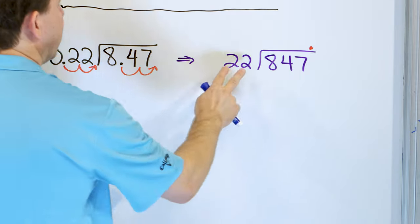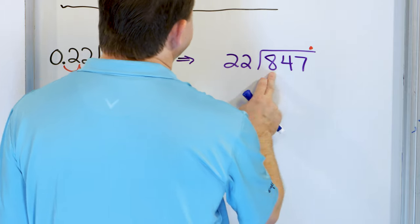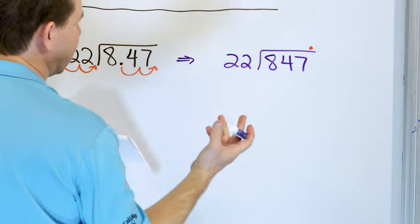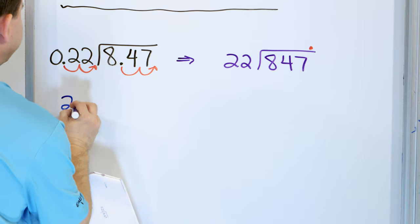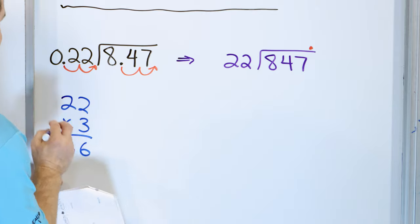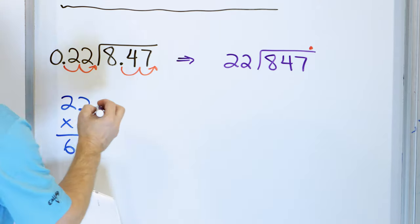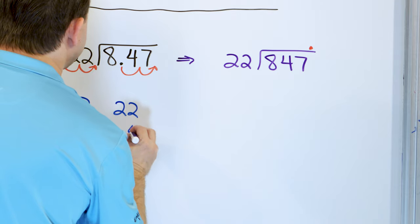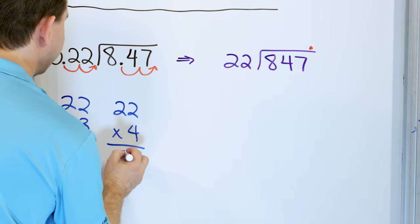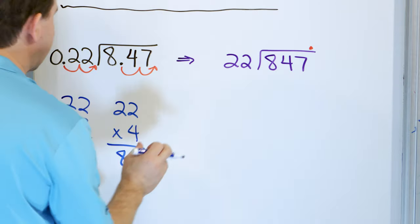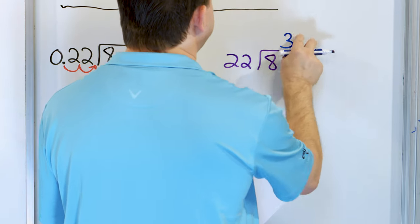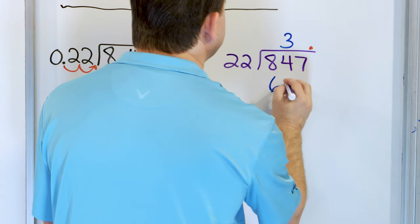22 cannot go into 8 — too small. 22 can go into 84. I'm not sure how many times, so let me try over here. 22 times 3: 2 times 3 is 6, 2 times 3 is 6 — that's 66. That's pretty close. Let's try 22 times 4: 2 times 4 is 8, 2 times 4 is 8 — that's 88, which is actually too high. So it only can go 3 times. Three times 22 is 66, and we subtract.